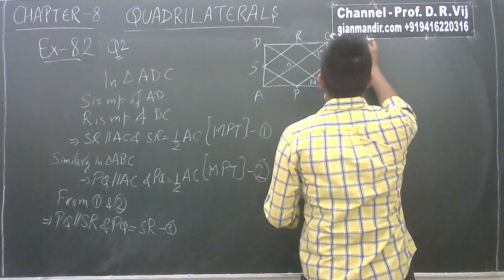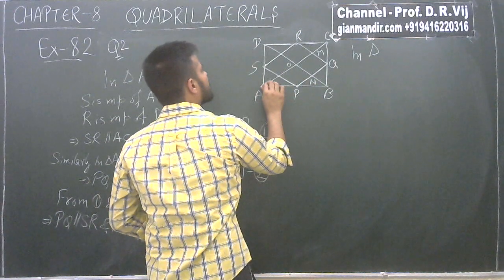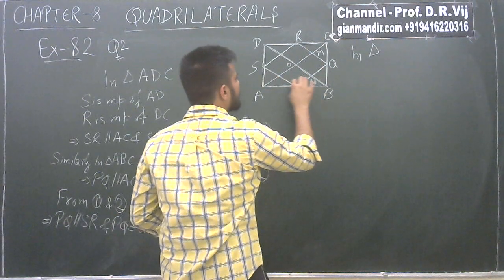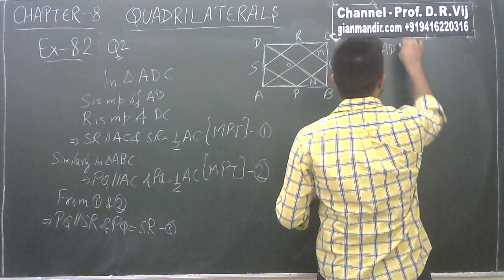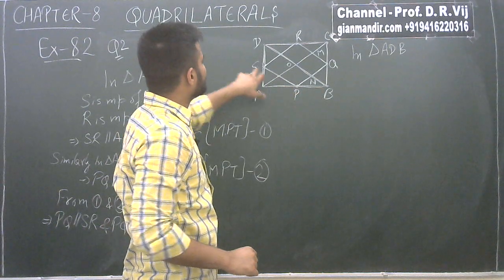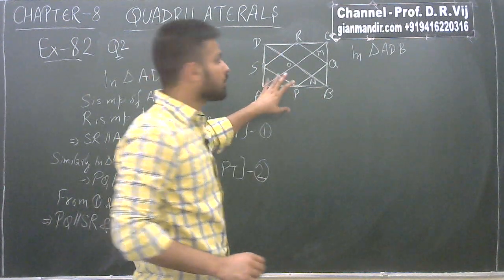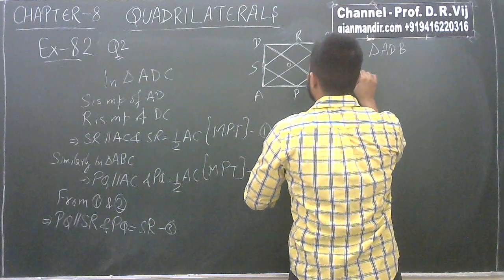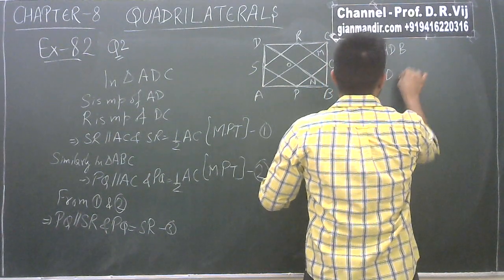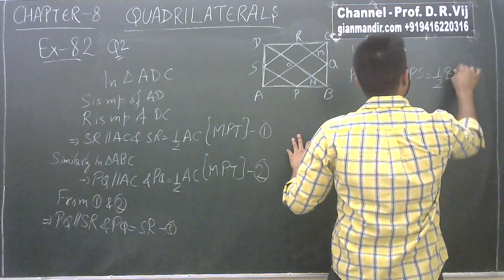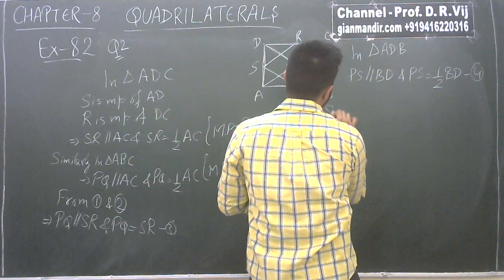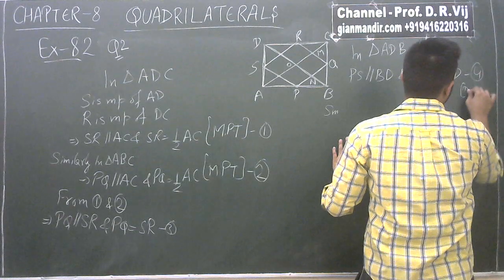Similarly, in triangle ADB, P is the midpoint of AB and S is the midpoint of AD, so by the midpoint theorem, PS is parallel to BD and PS is equal to half of BD. We will take this as statement 4, by MPT.